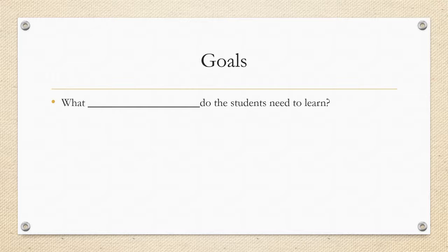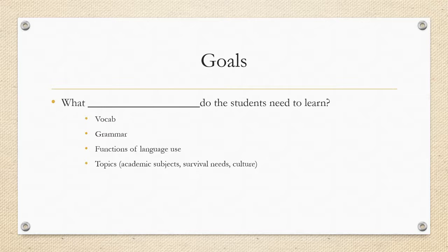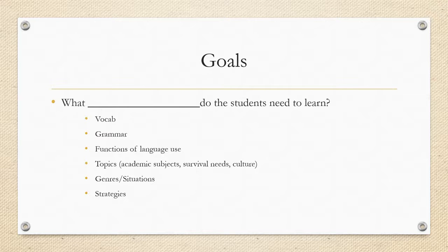From your needs analysis, you've probably found things that students need to learn. Goals could address vocabulary, grammar, functions of language use, and topics. Topics could be all types of things — maybe students need English for science classes, to go to the grocery store, or to learn about culture. They might also need to learn about genres or situations, such as how a storybook differs from a science textbook. And strategies students need to communicate successfully.